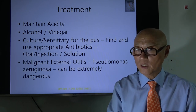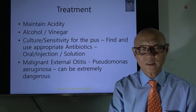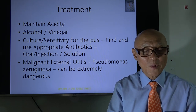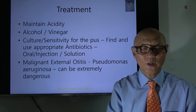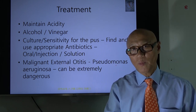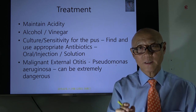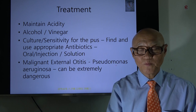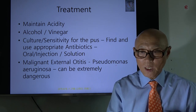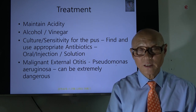Also find some way to maintain the acidity of your ear canal. Once external otitis starts, we have to treat it by trying to maintain that acidity — maybe swabbing with an alcohol sponge. Alcohol and vinegar are very helpful for maintaining acidity. When there is discharge — pus — we do a culture and sensitivity test in hospital to find the right antibiotics, which can be used orally, by injection, or even as a solution.